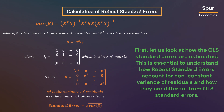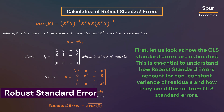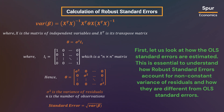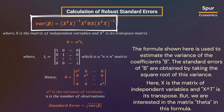First, let us look at how the OLS standard errors are estimated. This is essential to understand how robust standard errors account for non-constant variance of residuals and how they differ from OLS standard errors. The formula shown here is used to estimate the variance of the coefficients beta.